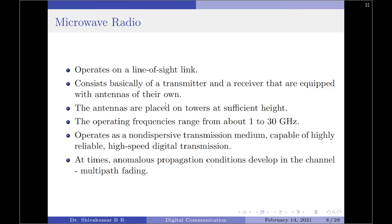Moving on to the next channel — microwave radio. A microwave radio channel operates on a line-of-sight link. It consists basically of a transmitter and a receiver equipped with their own antennas, placed on towers at sufficient height to keep the transmitter and receiver in line of sight of each other. The operating frequencies range from about 1 to 30 GHz. For a large fraction of the time in most locations, propagation conditions do not vary significantly from a direct line-of-sight path, and the radio channel operates as a non-dispersive transmission medium capable of highly reliable high-speed digital transmission.